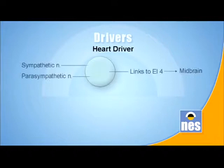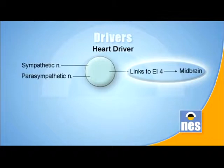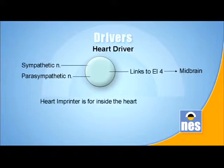The heart driver has been made out of bits of the electrical conduction system of the heart. The heart contracts in a certain way and makes a wave output - the electrocardiograph - that tells you what happens during that contraction. The heart driver is about the parasympathetic and sympathetic innervation and the conduction system of the heart, which are all found on the outside of the organ. Energetic integrator 4 is actually mixed in with this driver. Heart imprinter is for inside the heart; heart driver is for the outside of the heart, where the conduction system is.